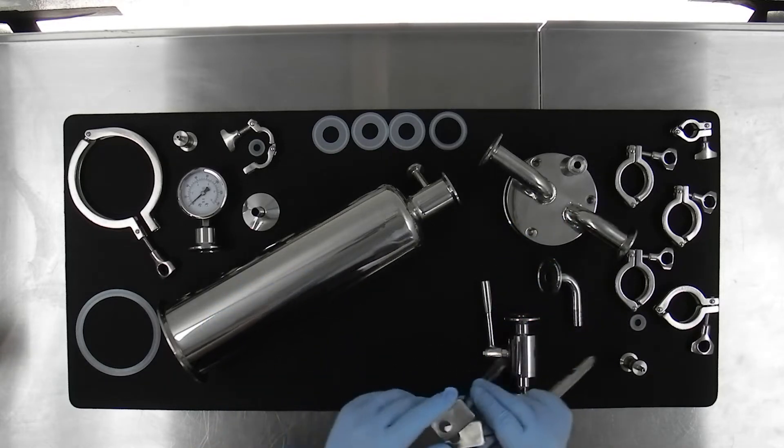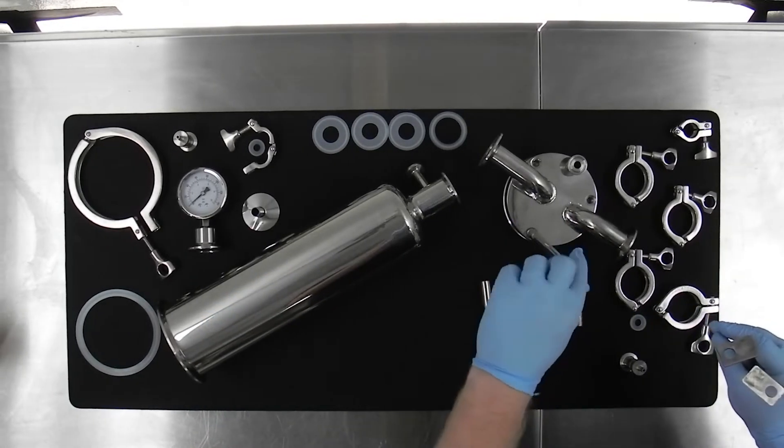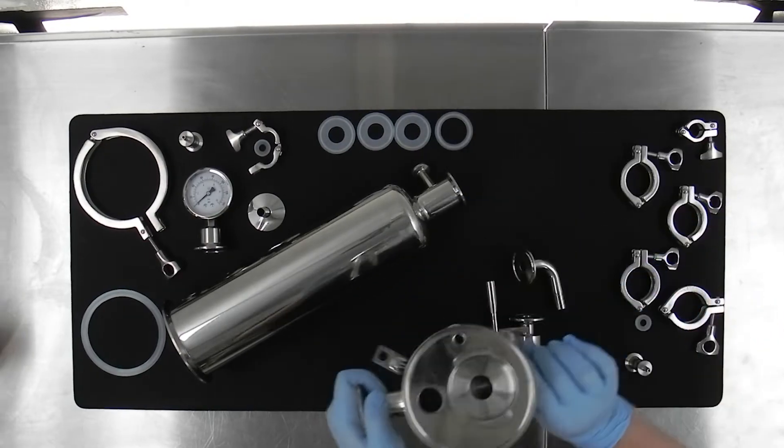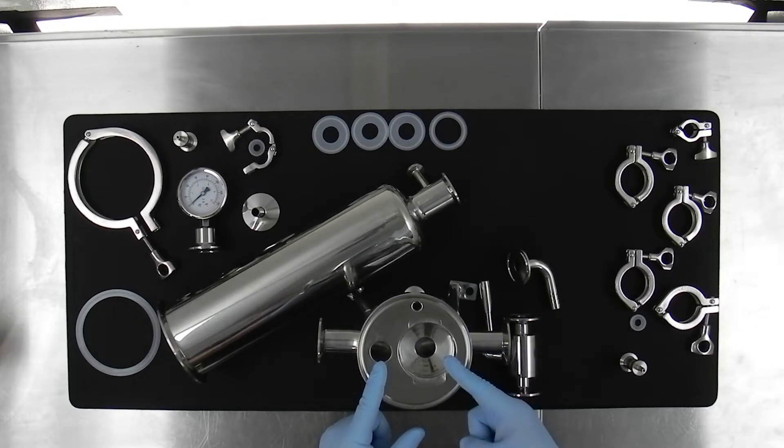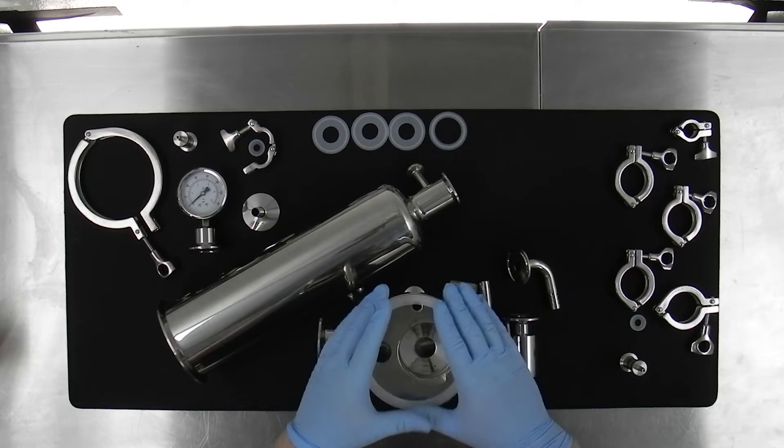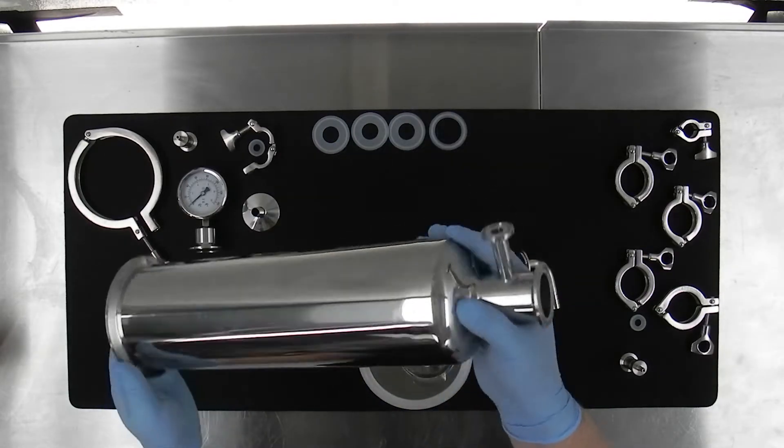We install the legs, tightening fully. Now we flip over the base, keeping in mind the position of the inlet and outlet. We install the gasket, and now we install the housing body.